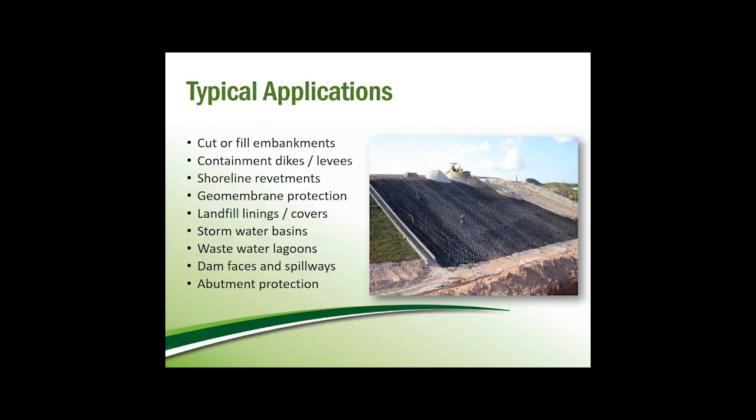Here's a list of some typical projects we see using the GeoWeb slope protection system. This isn't an exhaustive list by any means, but it gives a good idea of the range of applications the GeoWeb system can be used for. Going forward I'm going to be using mostly case studies to show how the GeoWeb system can be applied to different application types. Our first application type is going to be vegetated slopes.